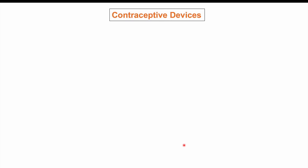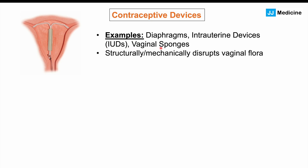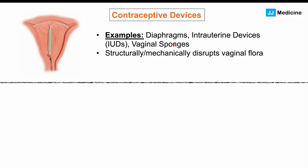Contraceptive devices are also a risk factor. Examples include diaphragms, intrauterine devices (IUDs), and vaginal sponges. These devices can increase the risk of vulvovaginal candidiasis because of structural or mechanical disruptions to the vaginal flora. Placing these devices within the vaginal cavity can disrupt the vaginal flora, increasing the likelihood of disrupting certain microbial species and allowing candida species to out-compete the other microbes.